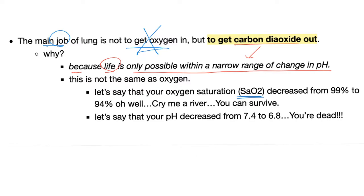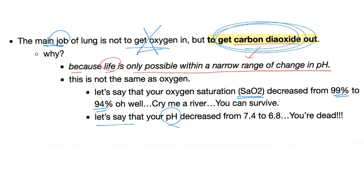If your oxygen saturation decreased from 99% to 94%, you can survive. But if your pH decreased from 7.4 to 6.8, you're dead. pH is very sensitive and very important. That's why the most important role of the lung is to get rid of carbon dioxide.